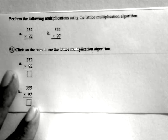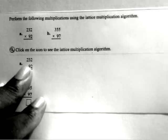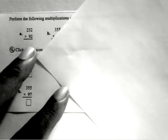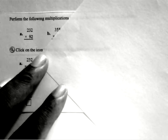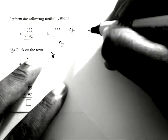So in part A, you get 232 times 92, and here's how you're going to set up the lattice multiplication approach. Notice we've got a three-digit number, 232, divided by a two-digit number, that's 92.